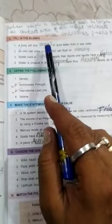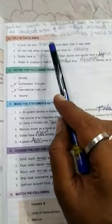Next, question number D. A body will sink more in pure water than in sea water. Answer will be more.